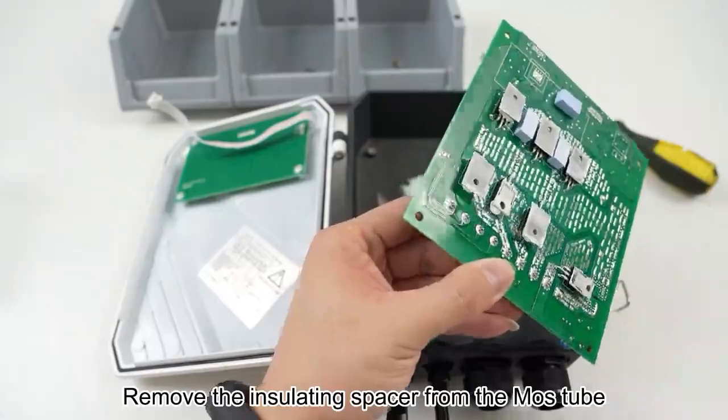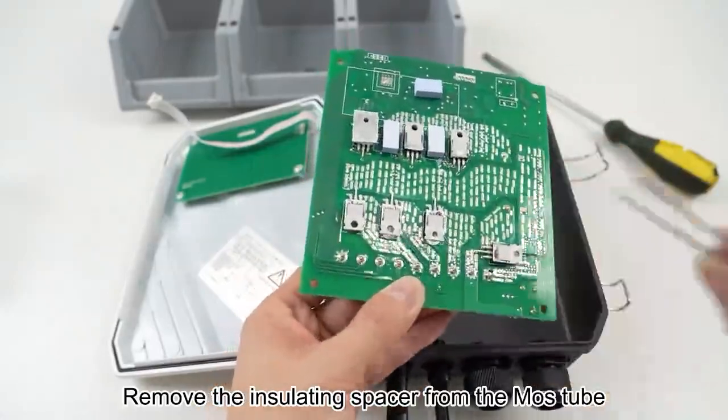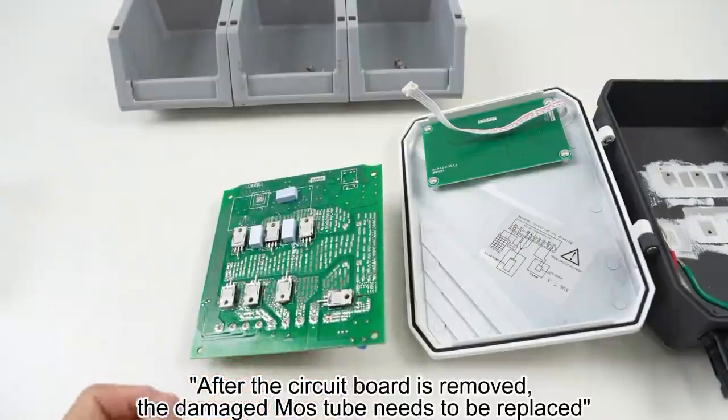Remove the insulating spacer from the MOS tube. After the circuit board is removed, the damaged MOS tube needs to be replaced.